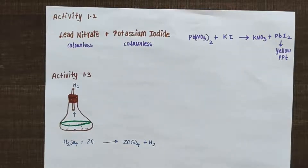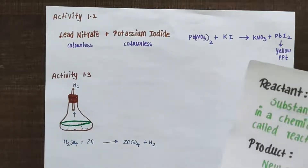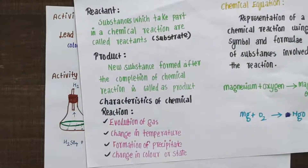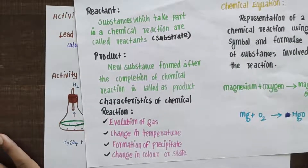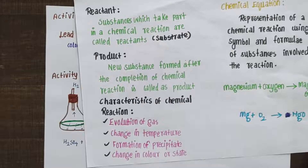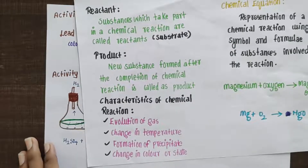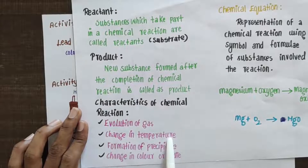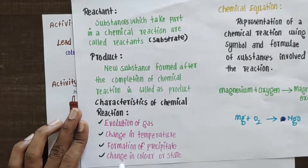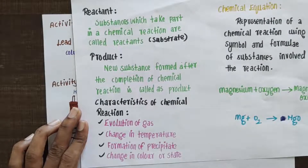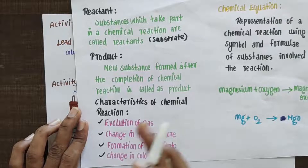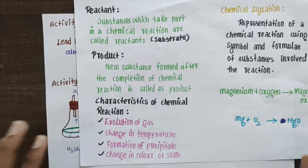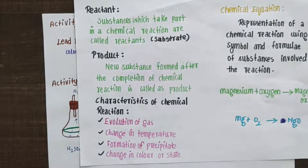This is one important activity where you are going to demonstrate the characteristics of a chemical reaction. We have discussed the characteristics of a chemical reaction in the last class — evolution of gas, change in temperature, formation of precipitate, change in colour or change in state. So if you are going to demonstrate the characteristics of a chemical reaction, you can say that you are going to demonstrate the activity.